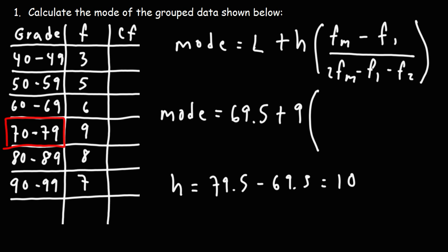Now, the frequency of the modal class, we have this number right here. It's 9. The frequency of the preceding class is this number here, which is 6. And then this is going to be 2 times 9 minus 6. The frequency of the succeeding class, the class above the modal class, that's going to be 8. So now we've just got to plug in everything into that formula to get the answer.